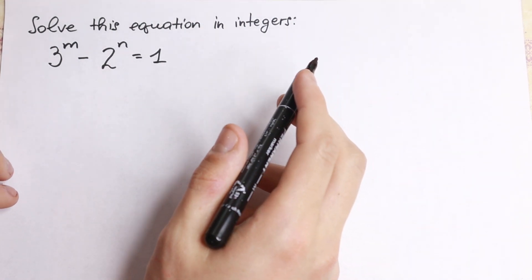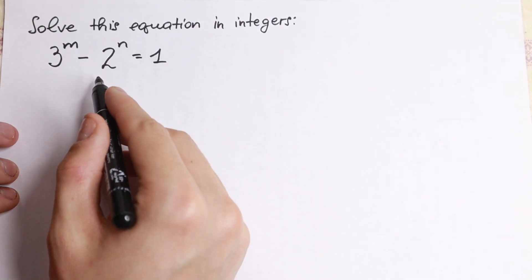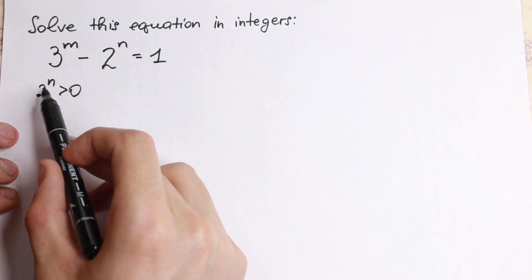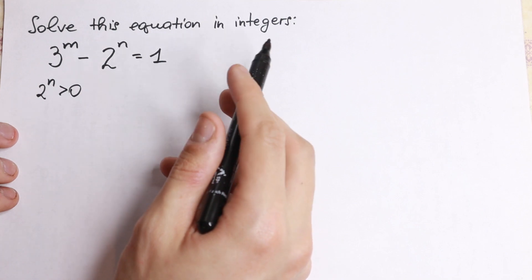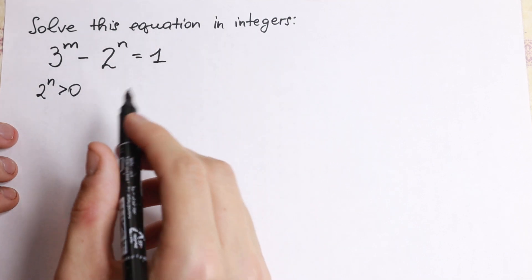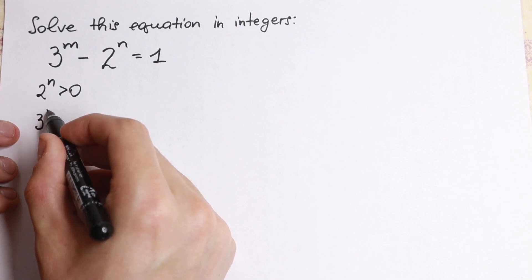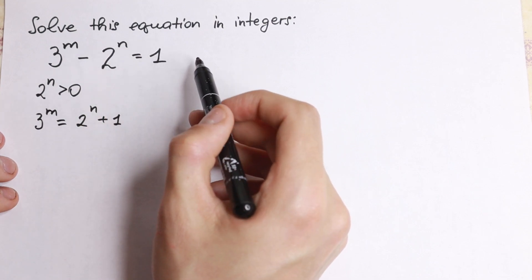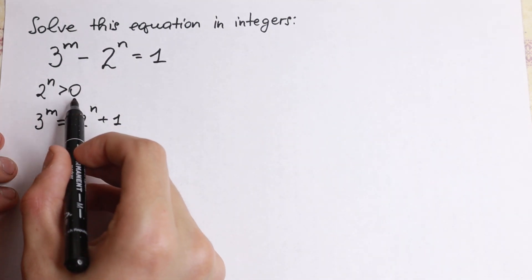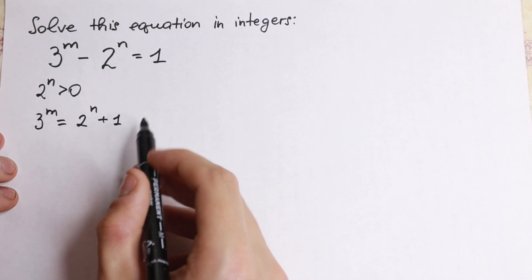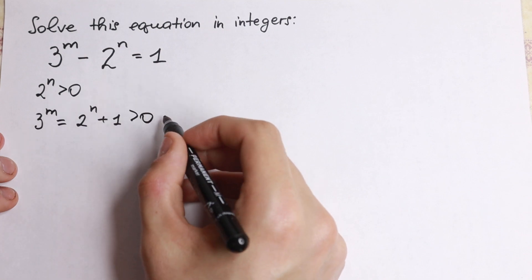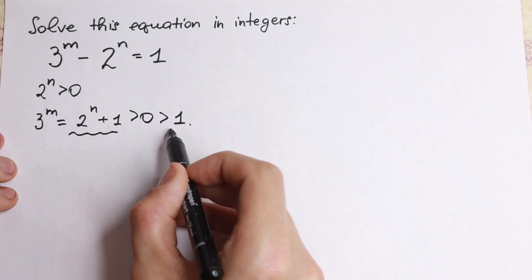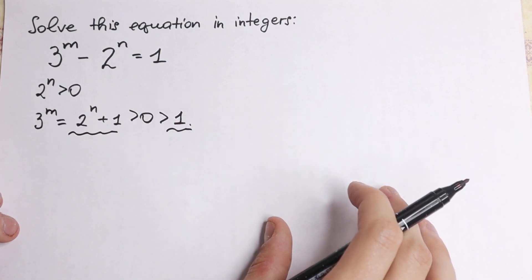Let's start with a little bit of thought right here, because I can see that 2 to the n is greater than 0. Because we subtract from this number greater than 0, and we'll have of course a positive result on the right hand side. So if we bring 2 to the n to the right hand side, we get 3 to the power m equal to 2 to the n plus 1. Adding 1 to a positive number gives us something greater than 1. So 2 to the power n plus 1 is greater than 1.